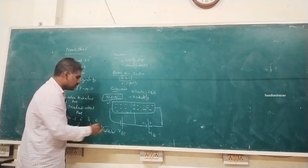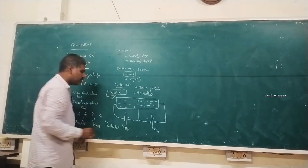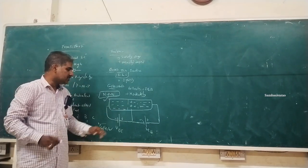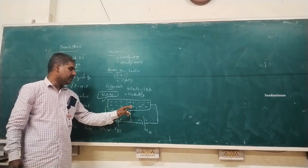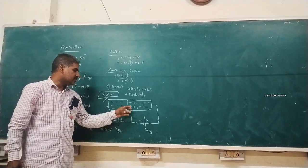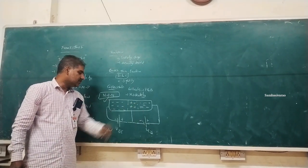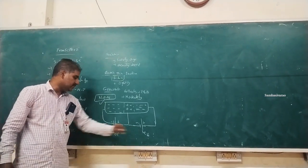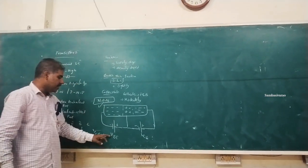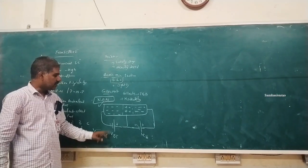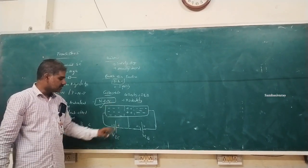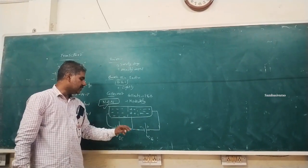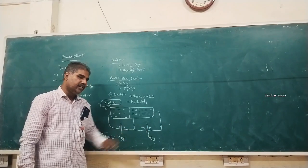In NPN, charge carriers move towards the base junction and from there towards the collector, which has supply VCC. VEE is the emitter power supply that drives the emitter-base junction in forward bias. VCC is the collector power supply that drives the collector-base junction in reverse bias.